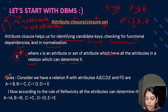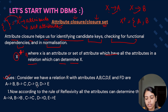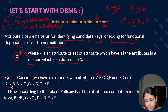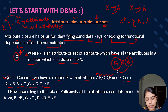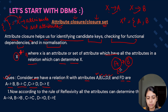Let's see a practice question on how we can determine the attribute closure of attributes in a relation. Consider we have a relation R with attributes A, B, C, D, and E, and functional dependencies: A determines B, B determines C, C determines D, and D determines E. A determines B means that if we know the value of A we can find the value of B, or B is functionally dependent on A. These concepts are covered in the functional dependency video.